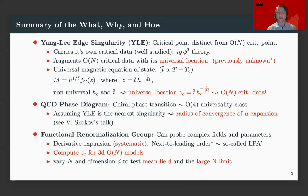And so what this magnetic equation of state allows us to do is take two non-universal inputs, this hc and this t-bar, and create a universal location zc. So this zc is what augments our critical data as the universal location of the Yang-Lee edge singularity. And this is the same picture for all the O(N) theories.